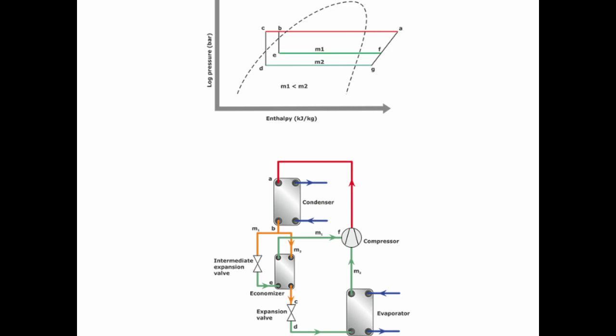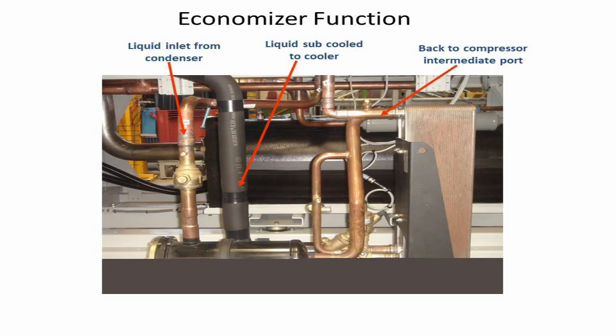So basically, economizer is a type of subcooler that uses part of the total refrigerant flow from the condenser to cool the rest of the refrigerant flow. The cold gas from the economizer can also be used to provide extra cooling for the compressor.